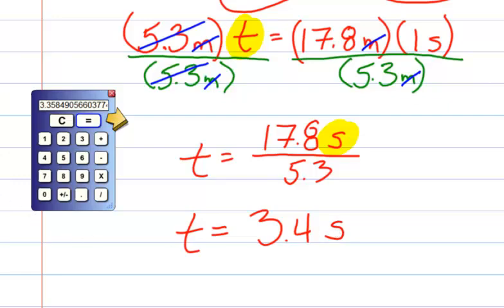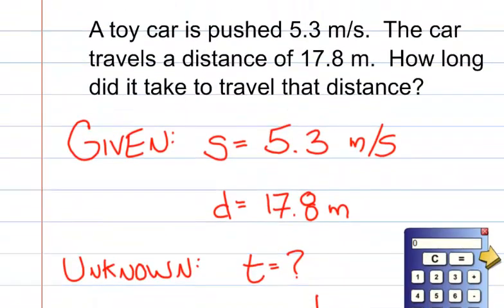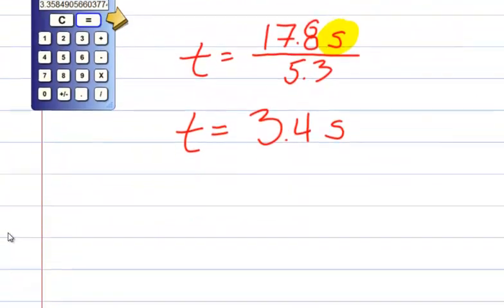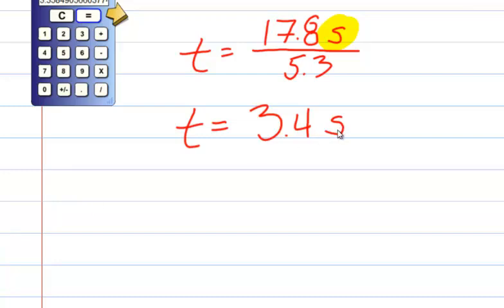Now, let's go back and give ourselves a sanity check. It's asking for how long did it take to travel that distance. It was asking for time. Did our unit come out in a unit of time? Time is equal to 3.4 seconds. Yes, it did. So we know that we worked it correctly.